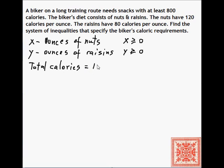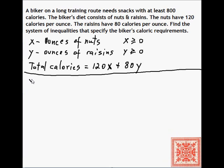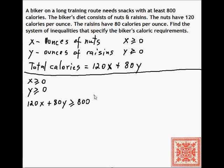The total number of calories is 120x + 80y. So the system of inequalities is: x ≥ 0, y ≥ 0, and 120x + 80y ≥ 800.